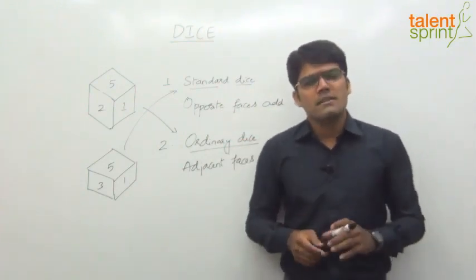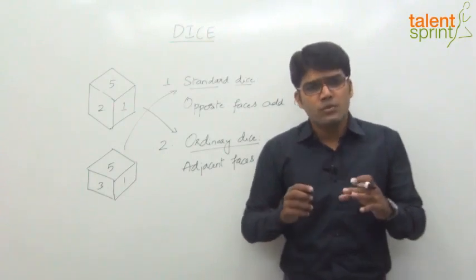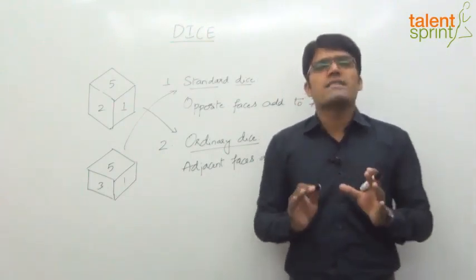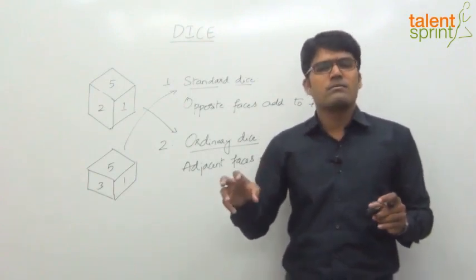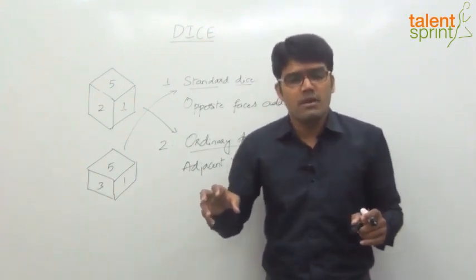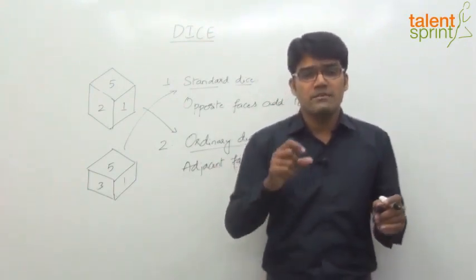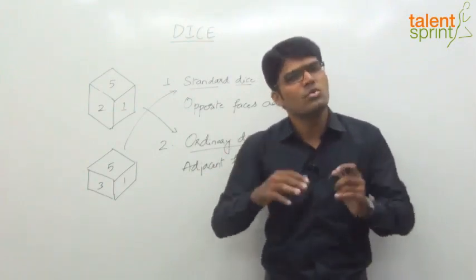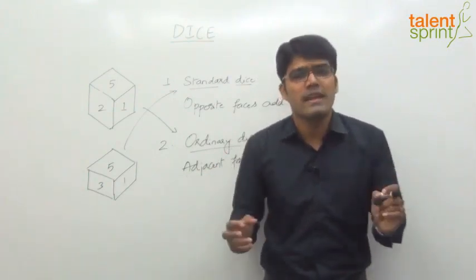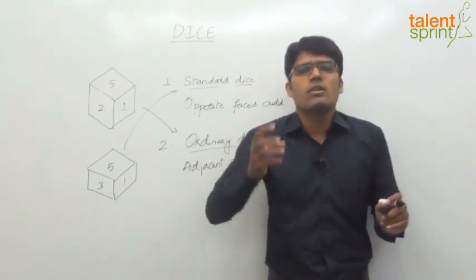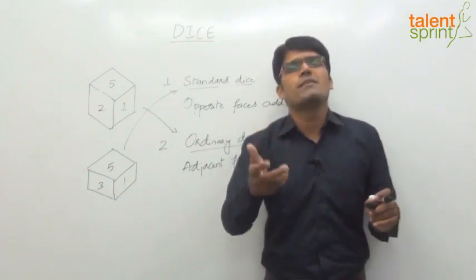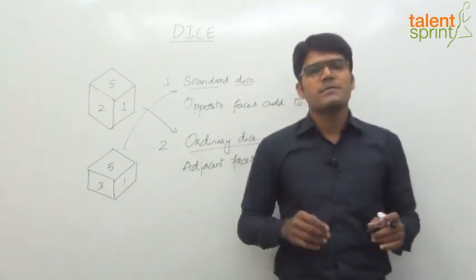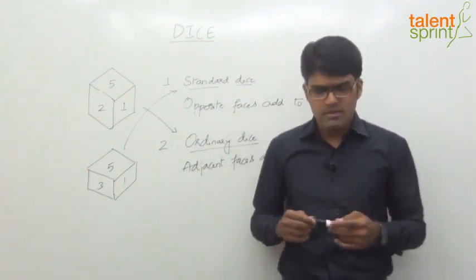Now let us look at the different types of questions that are asked. Basically there is only one concept here — different throws of a dice are given, where a die is shown from 2, 3, or 4 different angles, and we will find out what will be opposite to a given face or what will be adjacent to a given face. So we will look at different examples from this topic.